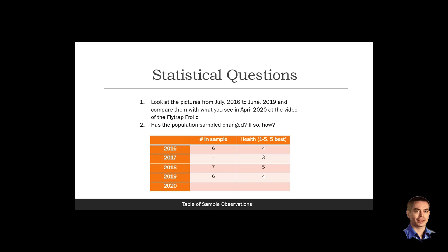The 2020 numbers are not filled in yet because we will see from the frolic on April the 30th, Thursday morning starting at 11. We'll be able to see a live example of how samples change and how the individuals have changed.